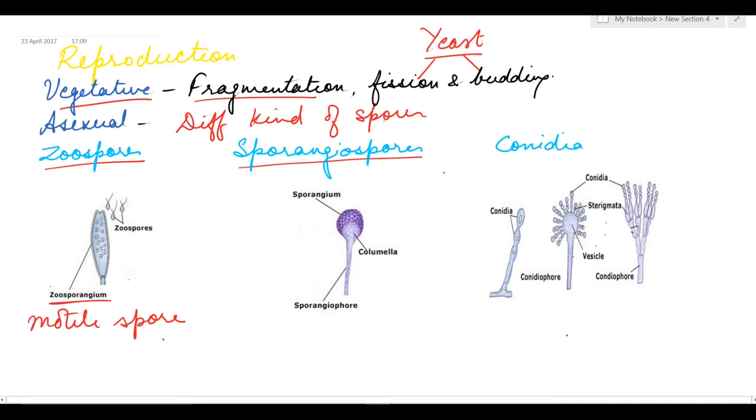Sporangiospores are unicellular, non-motile, multinucleated spores formed inside the sporangia. Conidia are unicellular, uninucleated, non-motile spores produced in chains from special hyphae called conidiophores, which may be unbranched, branched, or swollen up in the form of a vesicle.